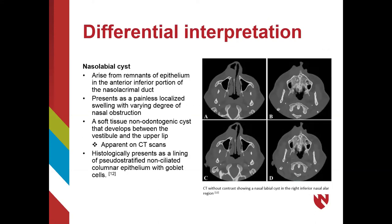A third differential to consider is a nasolabial cyst. This non-odontogenic lesion originates from epithelium found in the anterior inferior portion of the nasal lacrimal duct and descends to finish development between the facial vestibule and the upper lip. These lesions usually present clinically as painless swellings and, depending on size, can cause nasal obstruction and respiratory difficulties. As it is a soft tissue lesion, traditional radiographs are of little value; CT scans will present more useful information. The image on the right shows four CT scan panels clearly showing a nasolabial cyst in the patient's right inferior nasal region. On histological examination, nasolabial cysts are lined with pseudostratified non-ciliated columnar epithelium with goblet cells present.